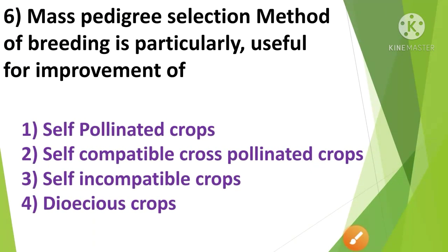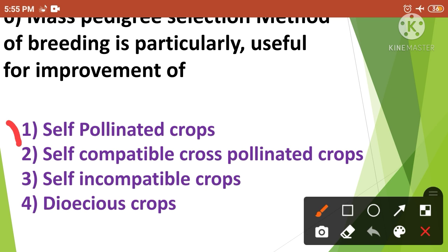Next question: Mass pedigree selection method of breeding is particularly useful for improvement of — 1st option self-pollinated crops, 2nd option self-compatible cross-pollinated crops, 3rd option self-incompatible crops, and 4th option dioecious crops. The correct answer is option 1st, self-pollinated crops. The mass pedigree selection method of breeding is particularly useful for the improvement of self-pollinated crops.